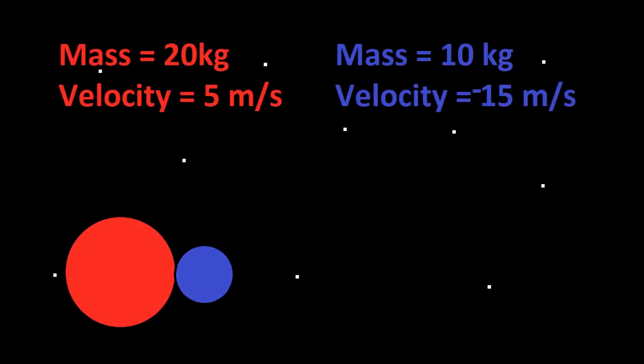We want to find the velocity after the collision of both balls. So now let's write down everything that we have. We have the red ball's mass of 20 kilograms and its velocity of 5 meters a second. And we have the mass of the blue ball, which is 10 kilograms, and the velocity of negative 15 meters a second.